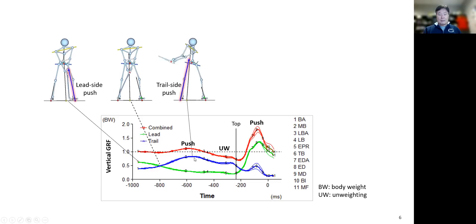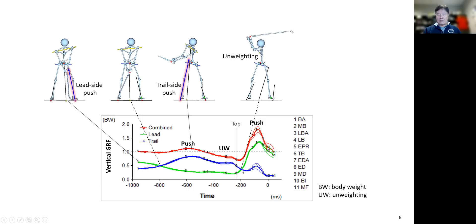Then we have the push from the trail side. The force acting on the lead side is a lot smaller, which is why the center pressure shifts to the trail side. During early downswing, the two forces become equal to each other again, so the combined center pressure should stay at the center of the stance.